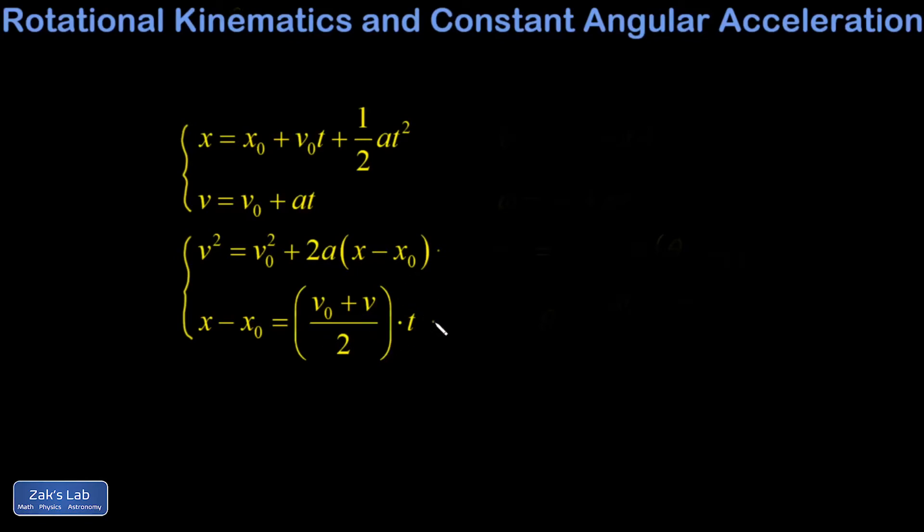The purpose of the last one was to eliminate a from the equations, which could be a good shortcut for certain types of questions. I wanted to point out on the last formula that what this says is the total displacement on the left here is equal to the arithmetic mean, just the simple average of the initial and final velocities multiplied by how much time has gone by. Again, this only works if a is constant, though.